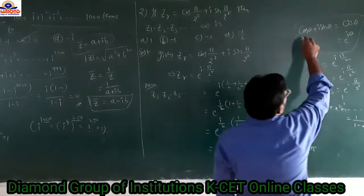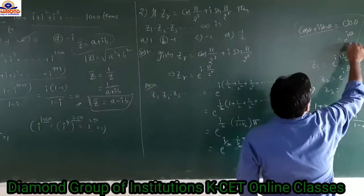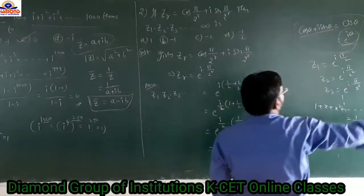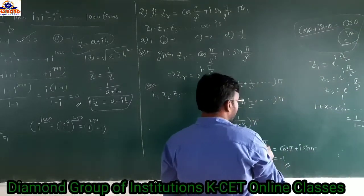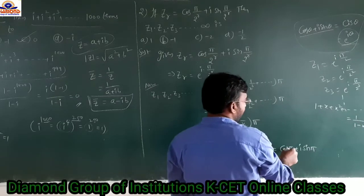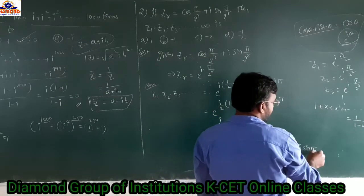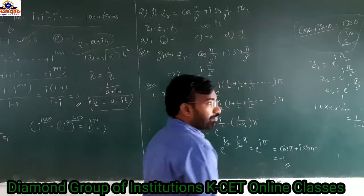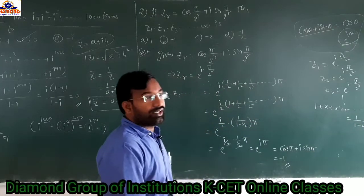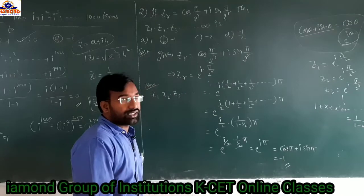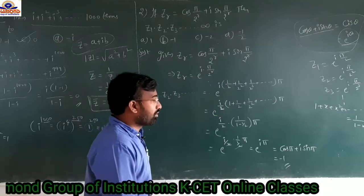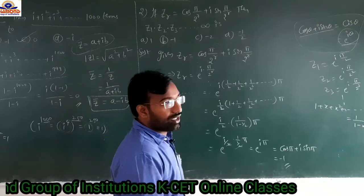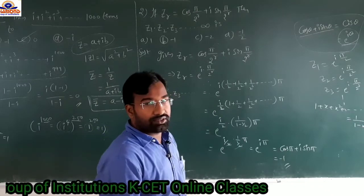According to this rule, cos θ plus i·sin θ equals e^(iθ), so e^(iφ) can be written as cos φ plus i·sin φ. So cos φ: cos 180° equals minus 1, and sin φ: sin 180° equals 0.